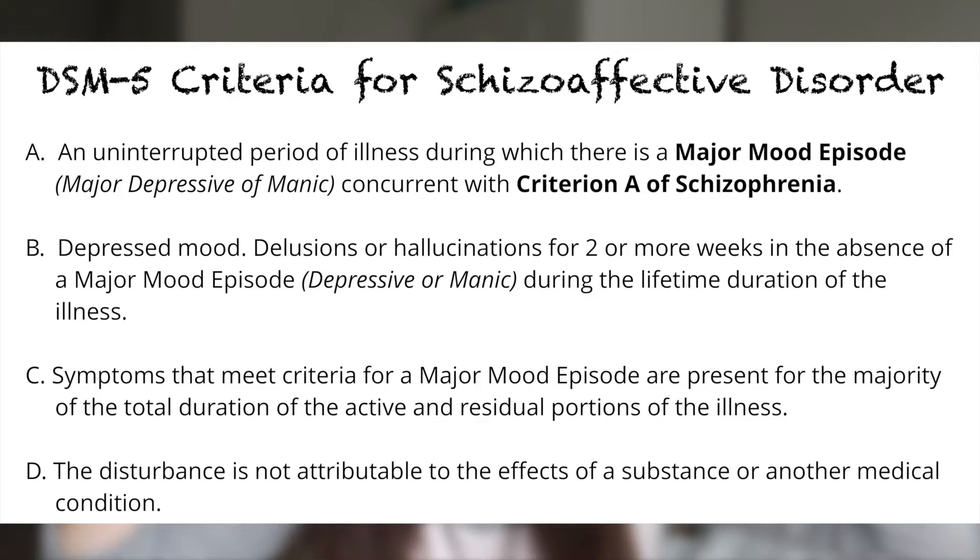In the DSM-5 — I'm going to throw up the criteria here, you can pause it if you want to read it — the DSM-5 describes Schizoaffective Disorder as a distinct diagnostic entity. It is a psychotic disorder, but it's not directly related to schizophrenia and not directly related to bipolar. It is its own entity. Previously it had been classified in the schizophrenia chapter, and it depends on who you talk to whether it's still on the schizophrenia spectrum.